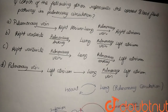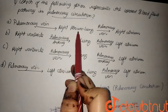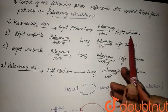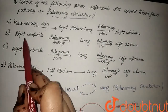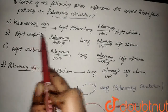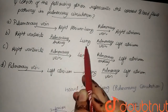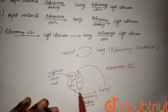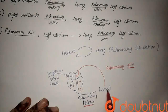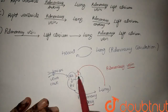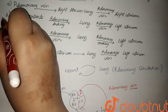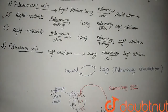The first option is pulmonary vein, right atrium, lung, pulmonary vein, right atrium — which is incorrect. The second option is right ventricle, pulmonary artery, lung, pulmonary vein, and left atrium. We just saw that right here: right ventricle → pulmonary artery → lung → pulmonary vein → left atrium. So option B is the correct answer to this question.